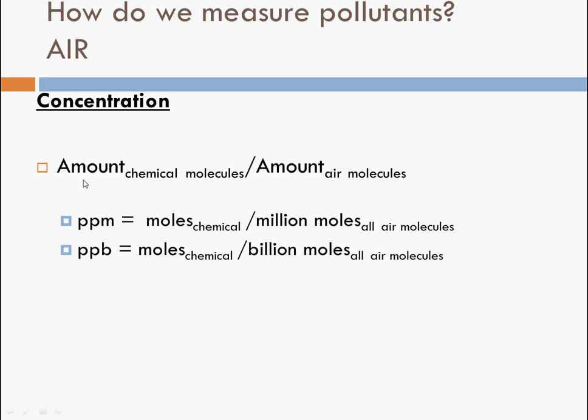And in this case, they're talking about the number of chemical molecules divided by all of the other air molecules, the amount or the number of all of the other air molecules. So parts per million would be, for example, moles of a chemical in the air divided by a million moles of all the other air molecules. Parts per billion, the same thing, but billion moles of all the other air molecules.